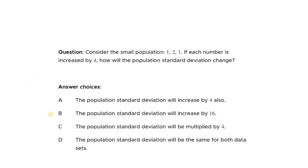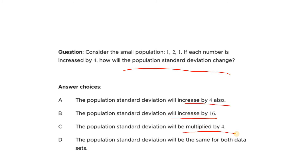Coming to the next question: consider the small population 1 to 11. If each number is increased by 4, how will the population standard deviation change? Option A: it will be increased by 4. Option B: it will be increased by 16. Option C: it will be multiplied by 4. Option D: it will not change. Pause the video and try to think about the correct answer — I am explaining here.